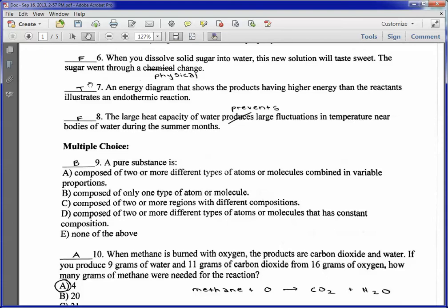Eight, the large heat capacity of water prevents large fluctuations, right? So the large heat capacity of water is why water doesn't change temperature significantly, while metal, which has a low heat capacity, changes temperature very rapidly.